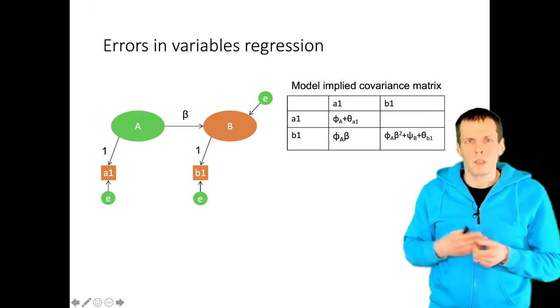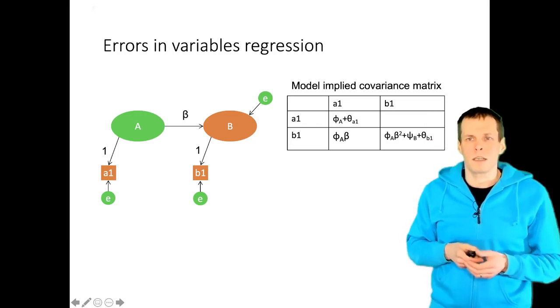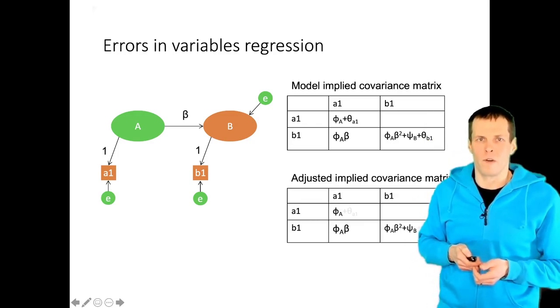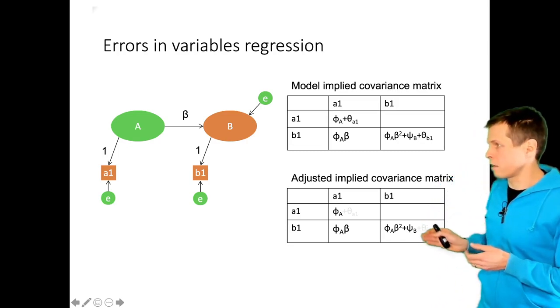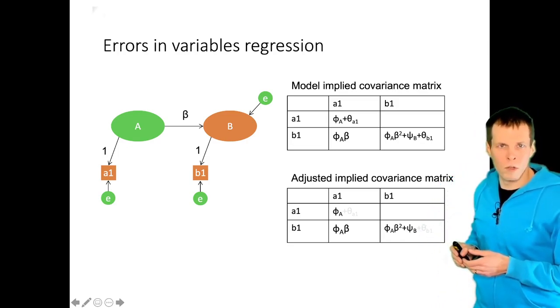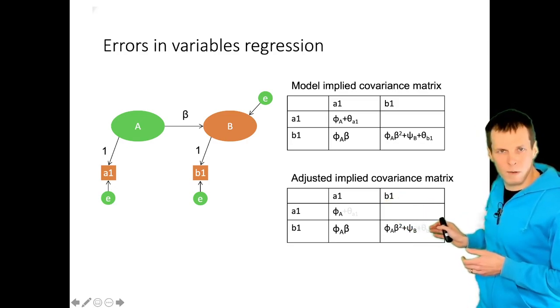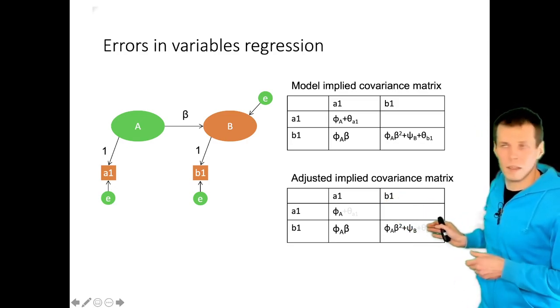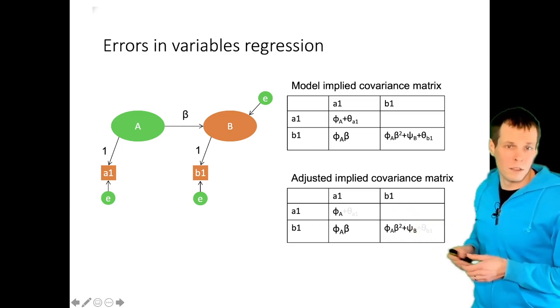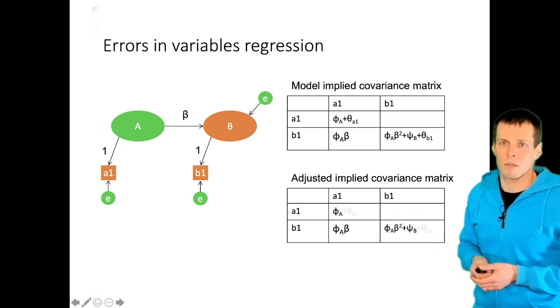What we try to do in errors in variables regression is that we adjust the covariances by eliminating the measurement errors. So if we know that the measurement variance here is theta 1 and we know that the measurement variance here is theta 2, then we can subtract those from the diagonal and that solves the measurement error problem.